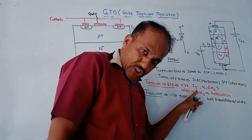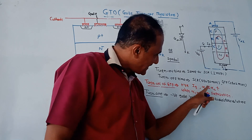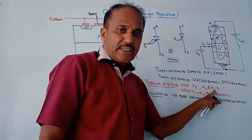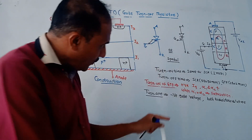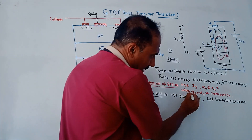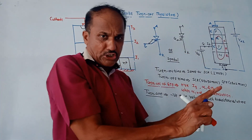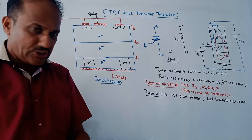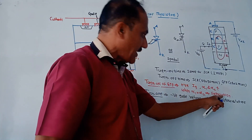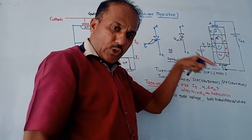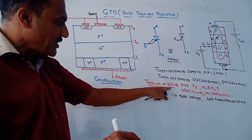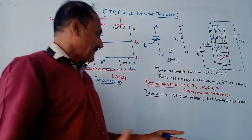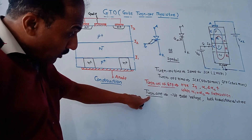The positive gate current Ig causes an increase in alpha-1 and alpha-2 of both transistors. At the stage at which alpha-1 plus alpha-2 equals one, both transistors — PNP and NPN — go into saturation, and this causes the turning on of the GTO. This is the same as that of SCR.